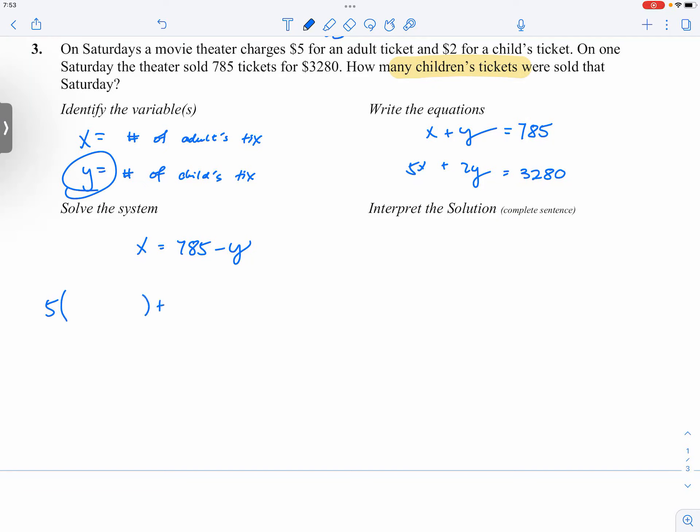And then we will go ahead and substitute and say that 5x + 2y = 3280. Inevitably, we will have to deal with some big numbers, so we have -5y + 2y...